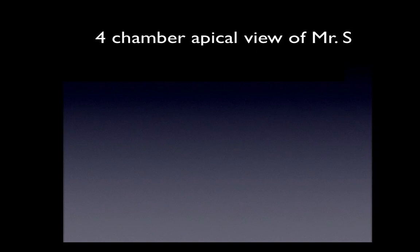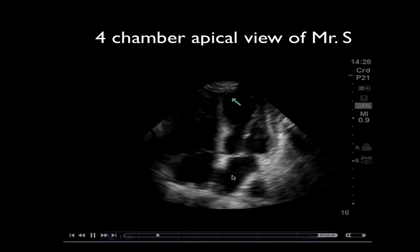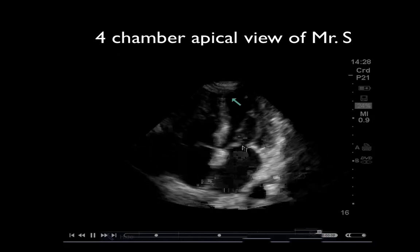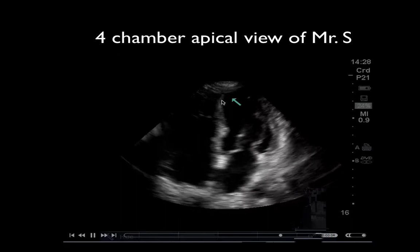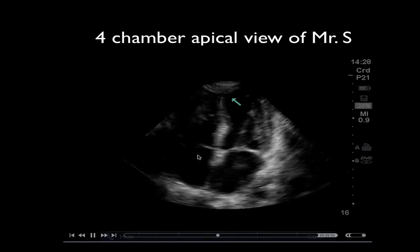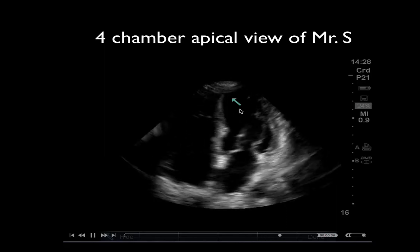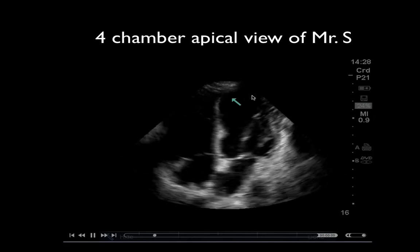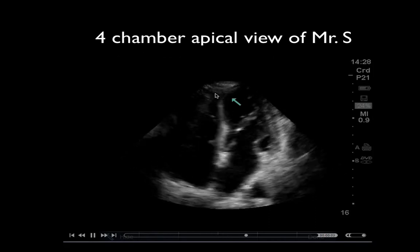Now let's look at another image. This is the actual four-chamber apical view of Mr. S. Left atrium going to the left ventricle. The mitral valve can be seen opening, with the valve tethered at both leaflets to the chordae tendineae going to the papillary muscle. The septum is over here, and this is the right side of the heart — right atrium, tricuspid valves opening and closing, right ventricle. The arrow points to the apex of the heart. The apex should be made up primarily of the left ventricular apex, and the right ventricle should be a small sliver, but that's not the case here.